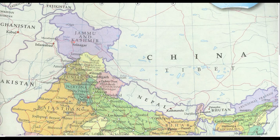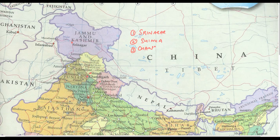UPSC asks various observational questions. Let us look at the capitals: Srinagar, Shimla, Dehradun, and Chandigarh. Can we arrange them from north to south? The first would be Srinagar, the second would be Shimla, the third would be Chandigarh, and the fourth would be Dehradun.